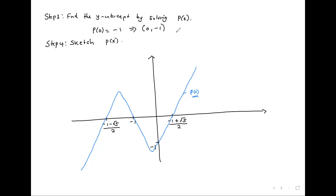Student question: how did you find the point (0, negative 1)? Since x is zero throughout the y-axis, whenever I'm looking for the y-intercept I just substitute zero for x and I get the y-intercept. It is a must to put zero in for x.